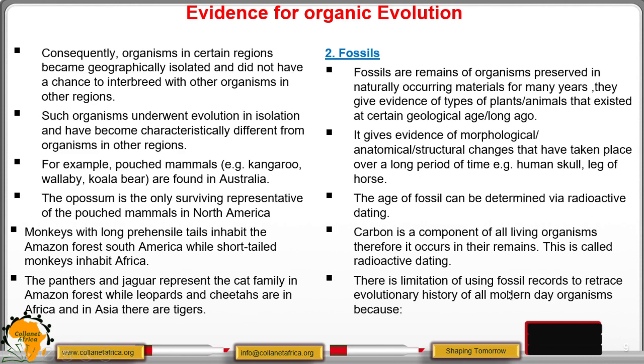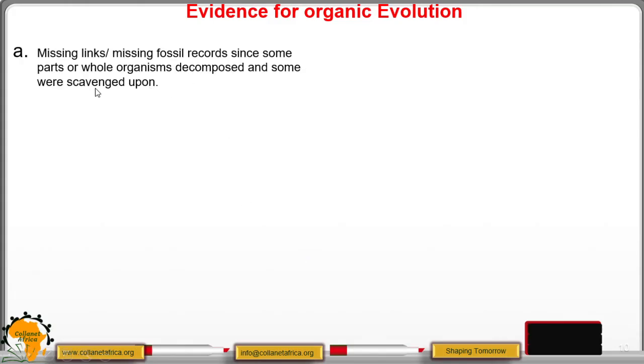And there are limitations of using fossil records to determine evolutionary history of all modern day organisms. Since there are what we call missing links or missing fossil records. Since some parts or a whole organism decayed and some were scavenged upon. They were eaten by scavengers. Scavengers are these organisms or animals that feed on remains. Example is the vulture.